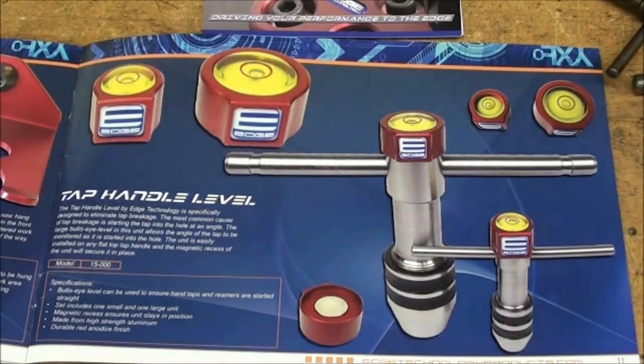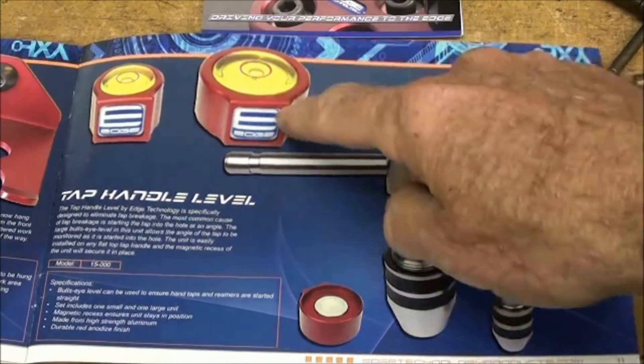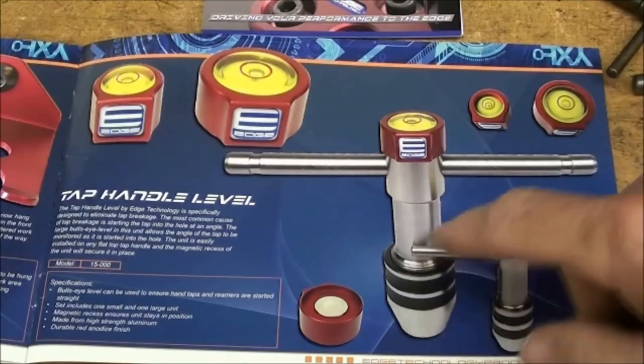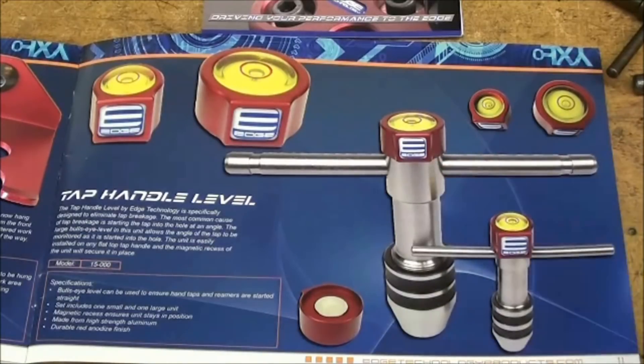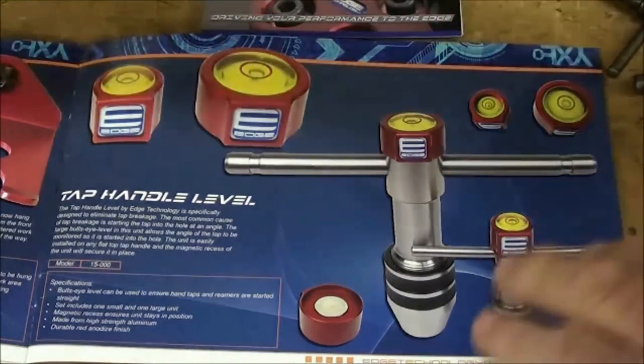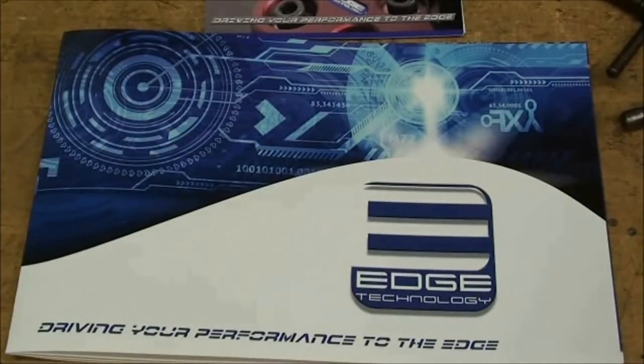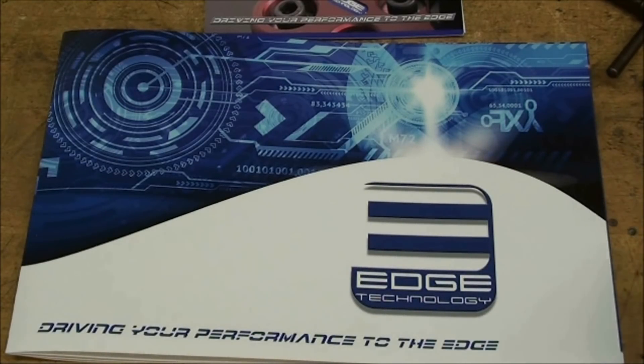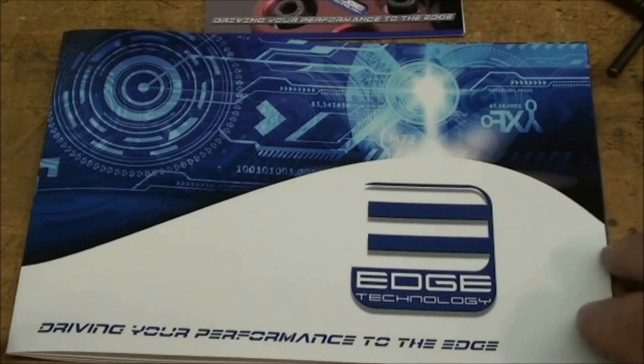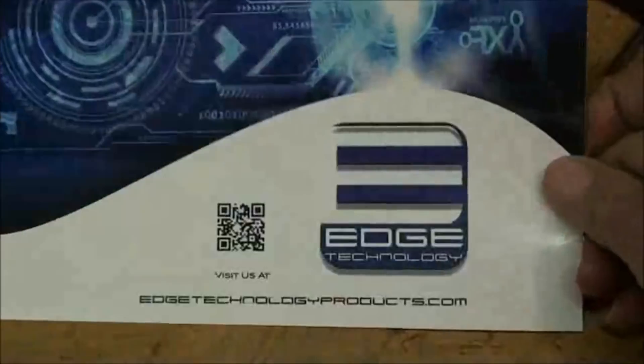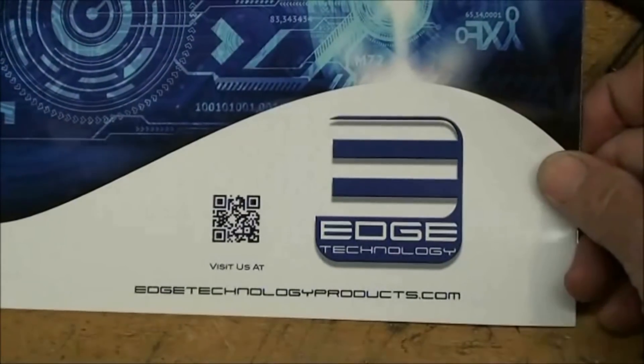The next method I wanted to show you was the tap handle level. And these are little bullseye levels that attach by a magnet onto your tap wrenches. And they come two in a set, two different sizes. And these are made by a firm called Edge Technology. And they've got a little catalog here with a bunch of neat machine shop accessories. So you can send for that. Or you can look on eBay and they have their products on there. But the website is edgetechnologyproducts.com.